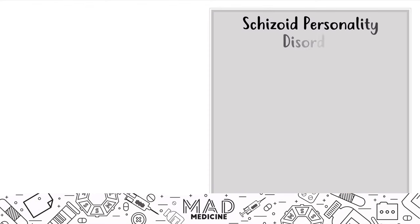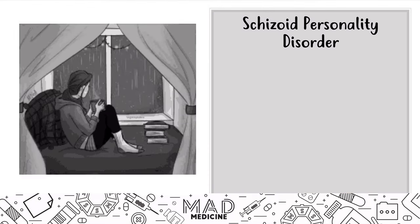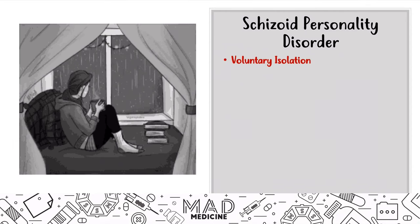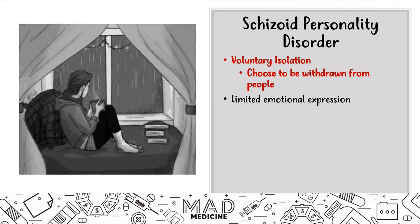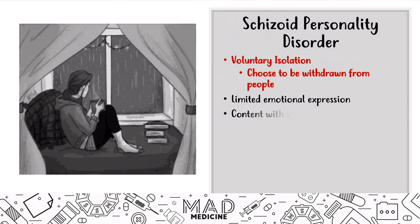Next is schizoid personality disorder. Patients with schizoid personality disorder are voluntarily isolated from the world — they choose to be alone and withdrawn. That is the main hallmark. They're not sad or depressed about it; they just don't want to be out in the world. They have limited emotional expressions and will be very muted. People might misunderstand schizoid for autism, but these patients choose to be isolated — they're content with social isolation.